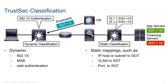When we talk about how that tag gets applied, it could happen dynamically leveraging 802.1x. We could also leverage MAC authentication bypass as well as web authentication. Additionally, you probably have devices in your environment that aren't authenticating. For static mappings — typically servers, devices hosting services, or appliances — we can associate a security group tag on the Ethernet port that connects to that device. Alternatively, you can do it based on VLAN, as well as IP host and subnet.